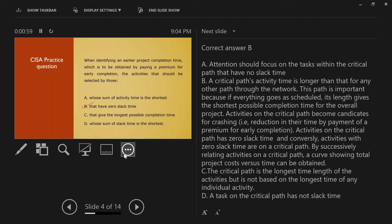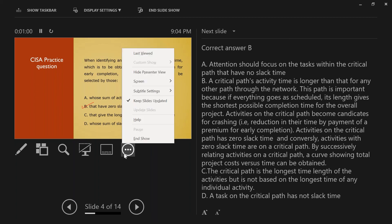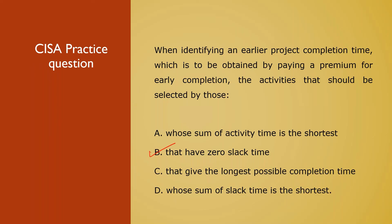Understanding the concept behind the question is very important — this is more about applying the concept you have learned. Every question is concept-based with a scenario built around it, and you are supposed to make a decision based on the options. Option C is not right — the critical path is the longest-length set of activities but is not based on the longest time of an individual activity. The task on a critical path has zero slack time. So B is the right answer for this question.